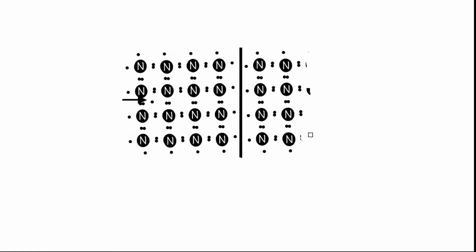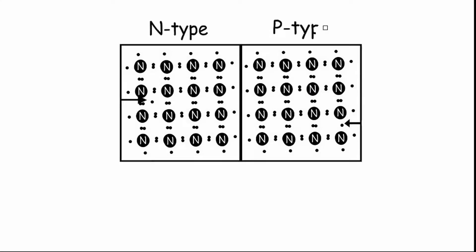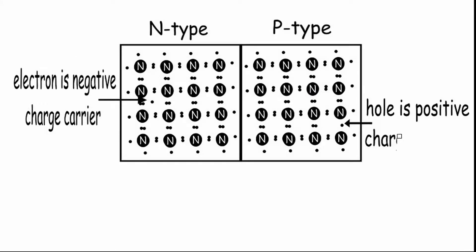In an N-type semiconductor, the majority carriers are negative charge carriers or electrons. In a P-type semiconductor, majority carriers are holes or positive charges.